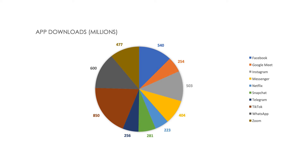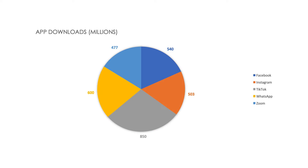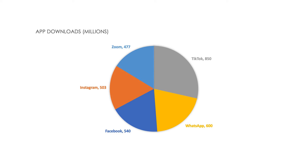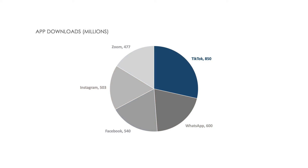If you absolutely must use a pie chart, follow these tips: never use more than five data points; rank the values in order where the biggest segment begins in the top right-hand corner; put all labels next to the segments so you can also remove the key; and use colors to help communicate what you want to point out.